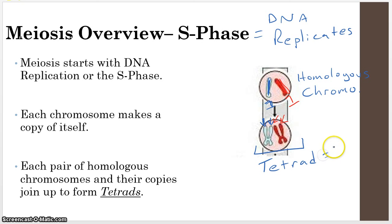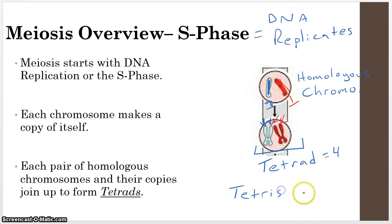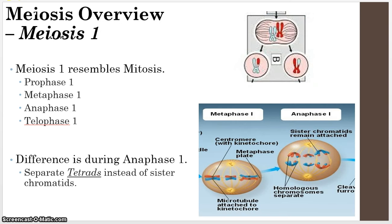When homologous chromosomes make their extra copy, it looks like there are four chromosomes — and we now call these guys a tetrad. Think of 'tetrad' like Tetris: when you get four lines in that game, that's the best thing in the world. Equate Tetris with tetrad and four — these are four chromosomes that are essentially the same thing. From the S phase we then move into meiosis one.